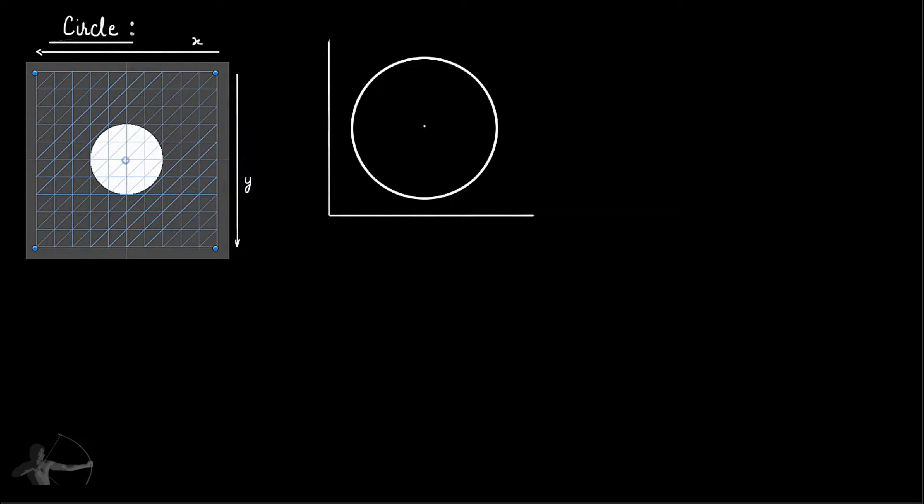This is a depiction of a circle that we want to draw and we are going to create this circle using alpha values. If this is the radius of the circle and this is the border of the circle...